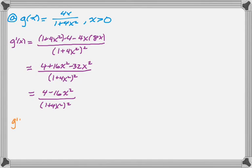So I need g prime of x to equal 0, or be undefined, but it's never undefined. So that means that the numerator is equal to 0, which means that 16x squared equals 4, which means that x squared equals 1 fourth, which means that x is 1 half because x needs to be greater than 0.